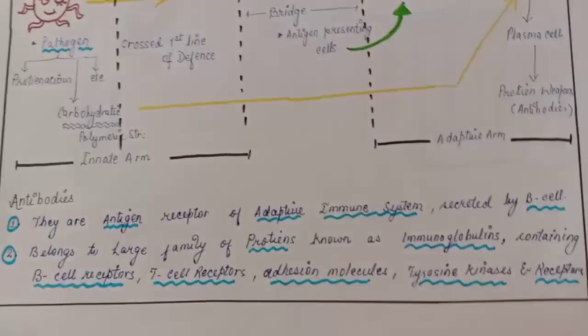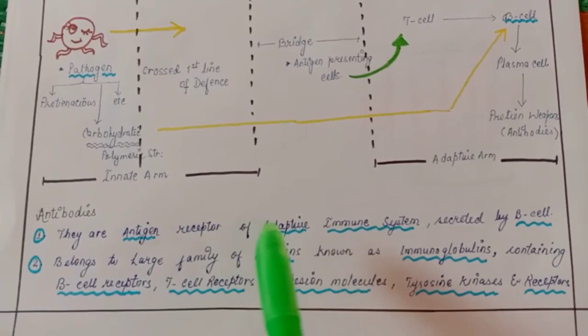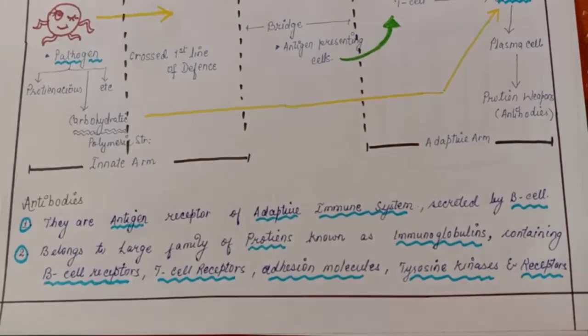So some of the features we will be discussing about antibodies. They are antigen receptor of adaptive immune system. They are nothing but the receptor of antigen and they are secreted by B cell.